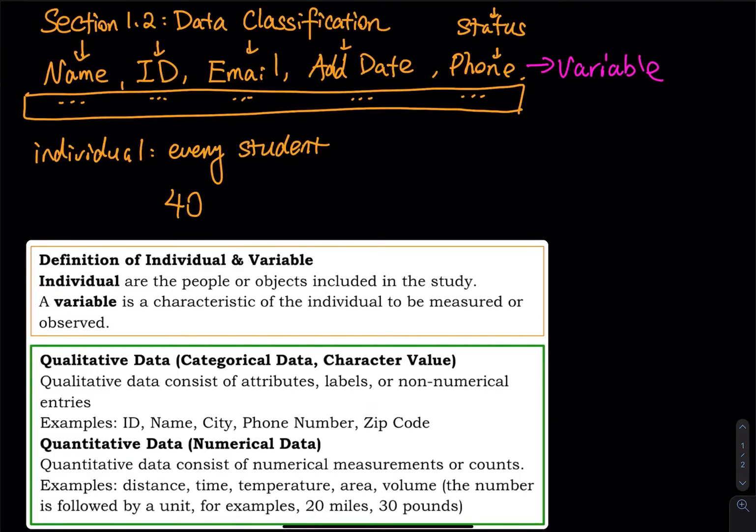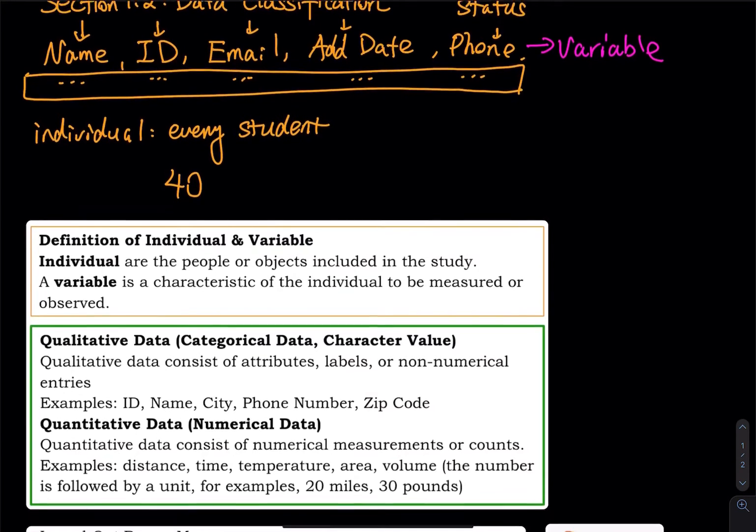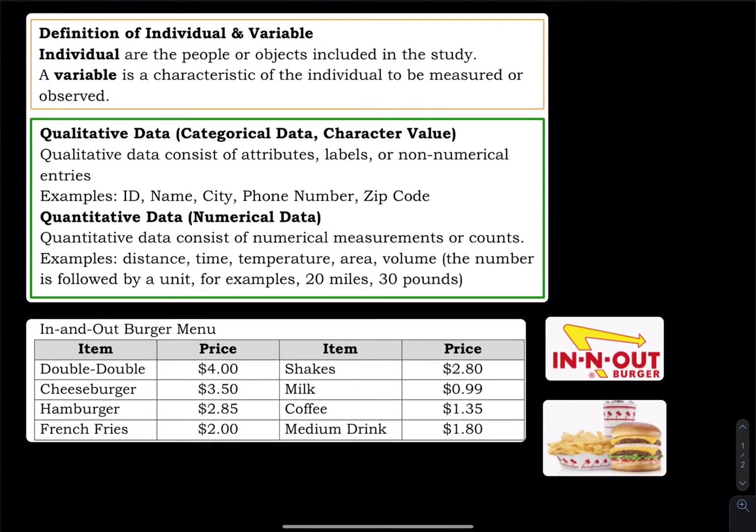So data can be either qualitative or quantitative. Let's take a look. Qualitative data consists of attributes, labels, or non-numerical entries. So let's say ID, name, city, phone number, and zip code. Quantitative data is also known as numerical data. Quantitative data consists of numerical measurements or counts - distance, time, temperature, area, so on and so forth.